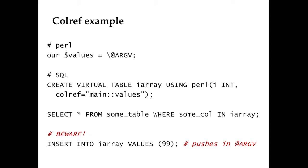Here I define one global variable — it has to be declared with 'our' because it has to sit in the symbol table so that from SQL we can bind to it. I'm declaring a reference to the argv array and then binding that to some table within SQLite called 'iray'.